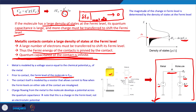The charging from the metal to the molecule develops a potential across the molecule, and that is modeled by the quantum capacitance. This is not the electrostatic potential — this is the change in the chemical potential and the change in the Fermi level. This circuit is not yet complete; it is just to model the quantum capacitance of the molecule in circuit form.